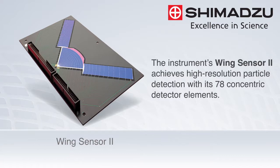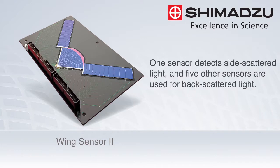The instrument's Wing 2 sensor achieves this with its 78 concentric detector elements. One sensor detects side-scattered light, and five other sensors are used for backscattered light.